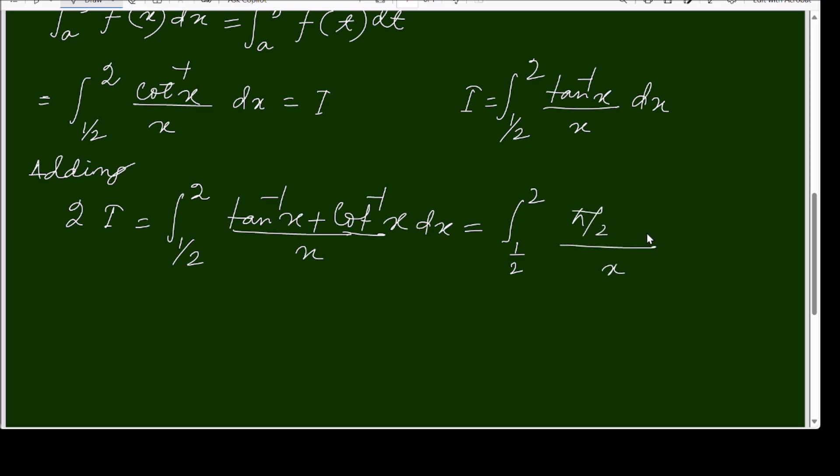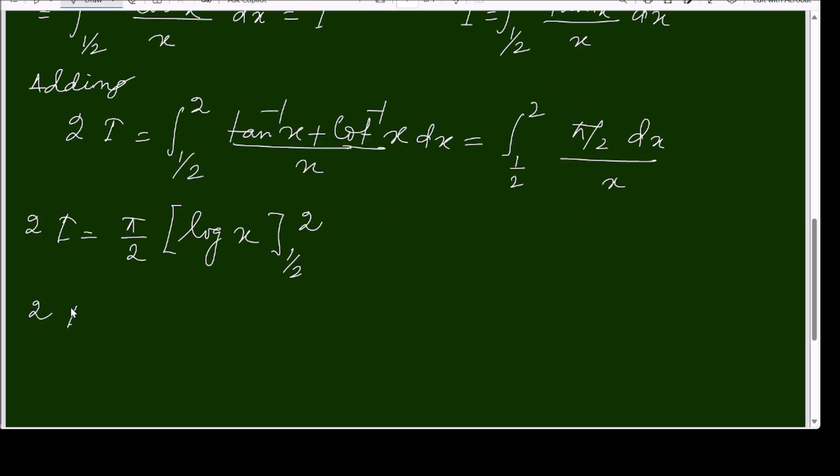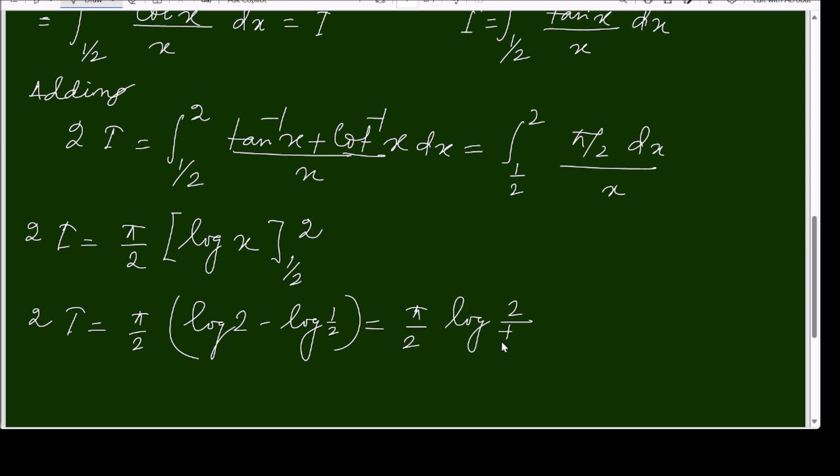Over x dx, and dx over x equals—this integral is log x. So twice I equals π by 2 log x, the limit is half to 2. Twice I equals π by 2 log 2 minus log half.